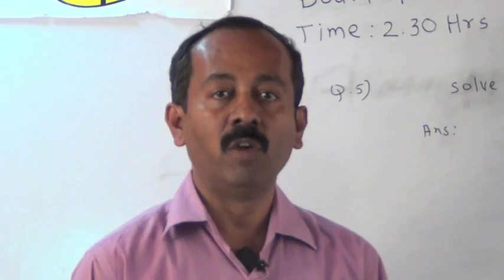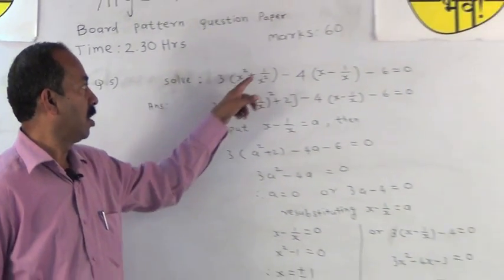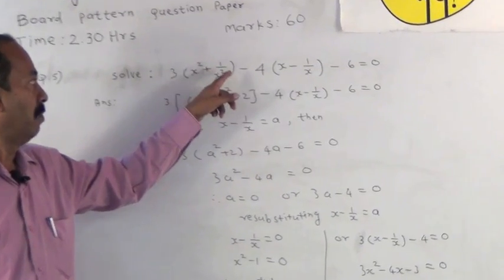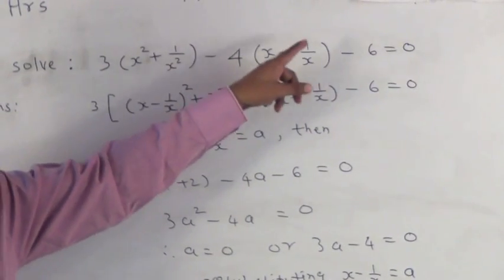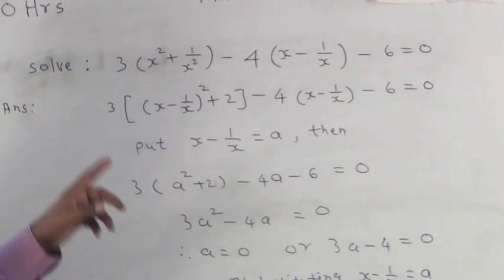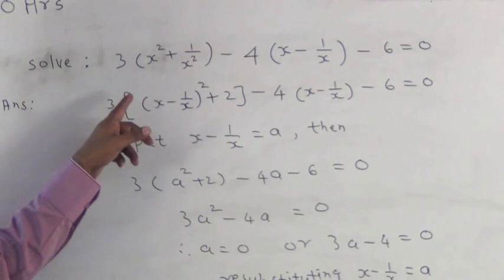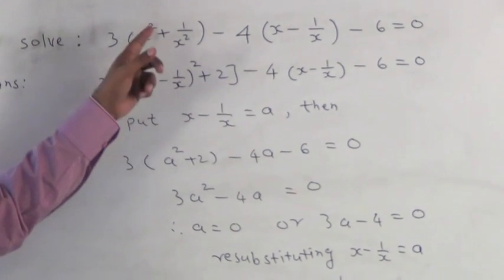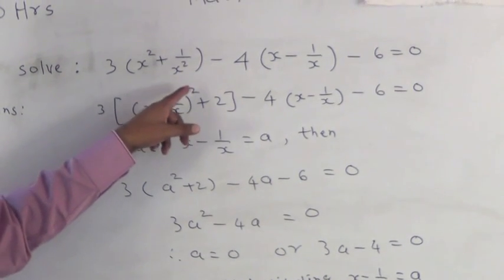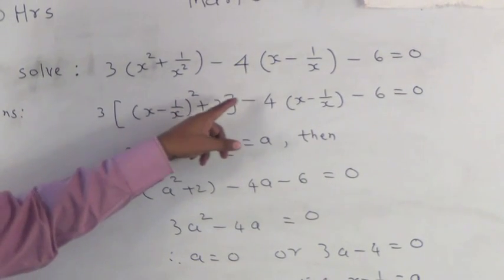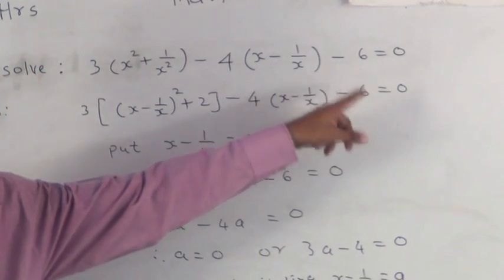We will solve one more example of this question. 3 in bracket x square plus 1 upon x square bracket complete minus 4 in bracket x minus 1 upon x bracket complete minus 6 is equal to 0. After expanding the bracket x minus 1 upon x square we get the first term. Next term will be 3 in bracket x minus 1 upon x bracket square plus 2 minus 4 into bracket x minus 1 upon x minus 6 is equal to 0.